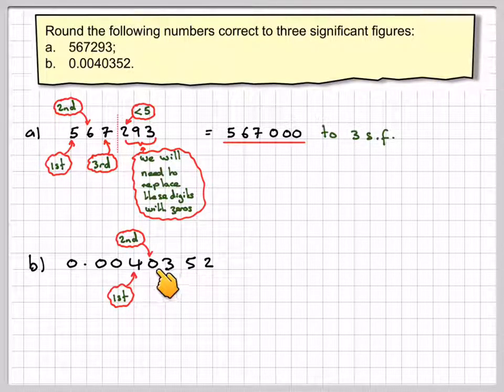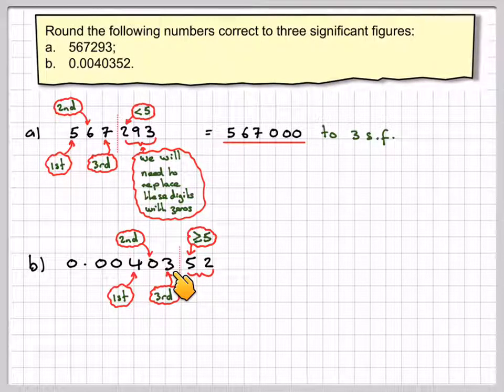The second, this zero is significant. And then the third is 3. So we'll draw a line in here. We've got 5, which is greater or equal to 5. So that 5 will make that 3 a 4.